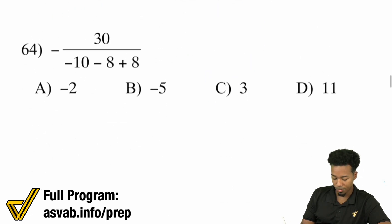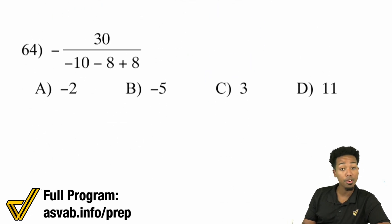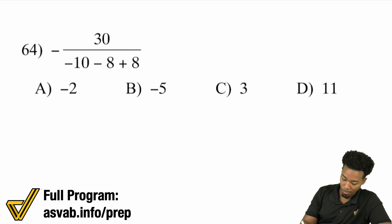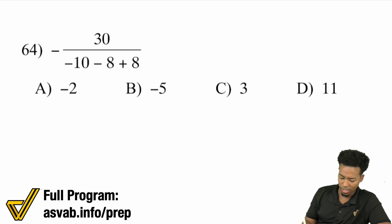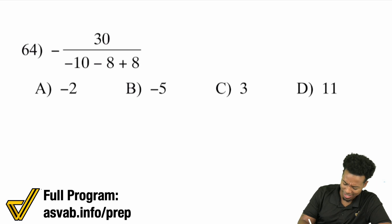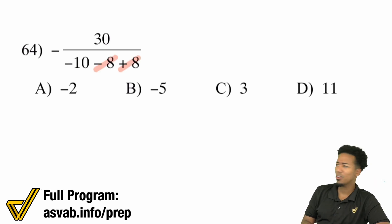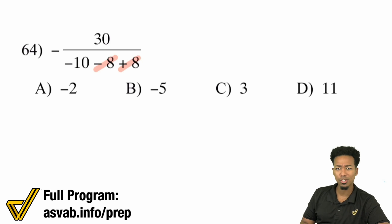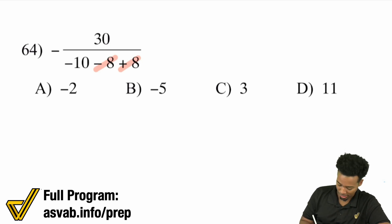Going through a couple more. We have negative, then 30 over negative 10, minus 8 plus 8. I can already look at the denominator and say: negative 8 plus 8 is going to cancel out — those are opposite operations right next to each other, with nothing stopping the cancellation.